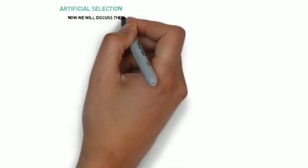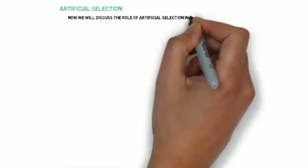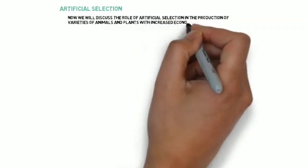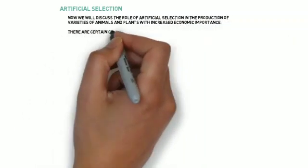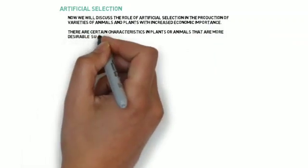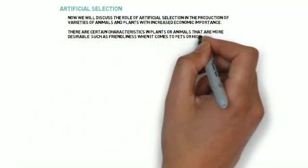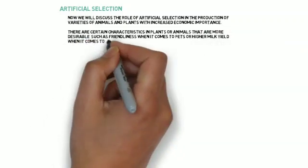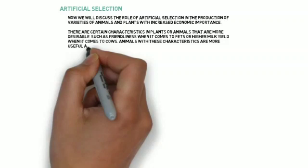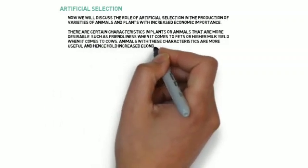Artificial selection. Now we will discuss the role of artificial selection in the production of varieties of animals and plants with increased economic importance. There are certain characteristics in plants or animals that are more desirable, such as friendliness when it comes to pets, or higher milk yield when it comes to cows.